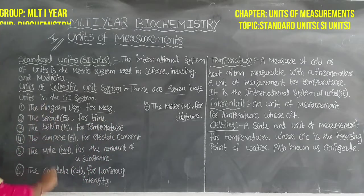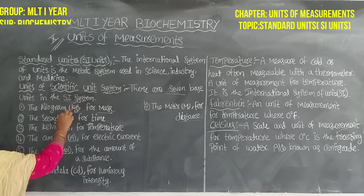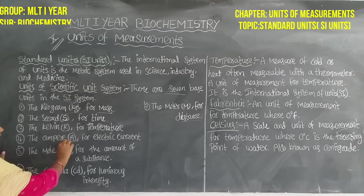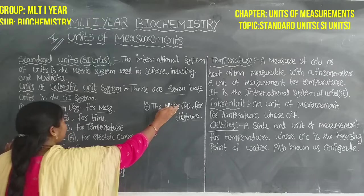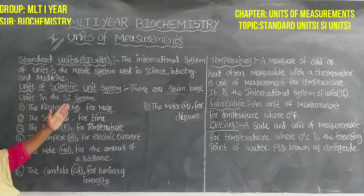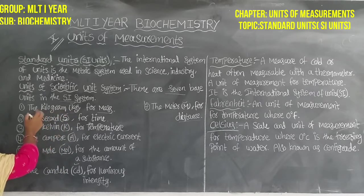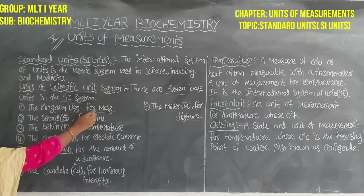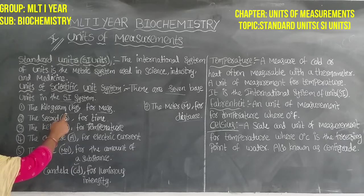There are seven base units in the SI system. The kilogram — abbreviation KG, Mole — mol, Candela — CD, and Meter — M. KG means kilogram, for mass and weight. The next is the second, for time.